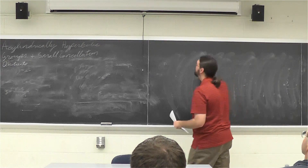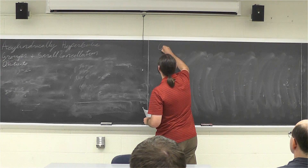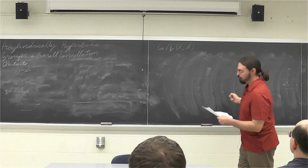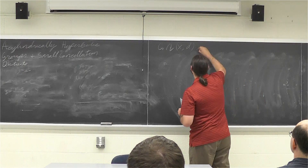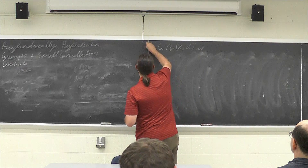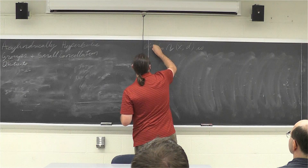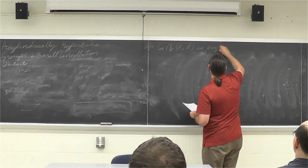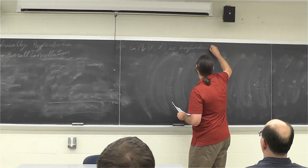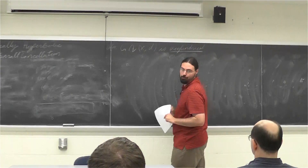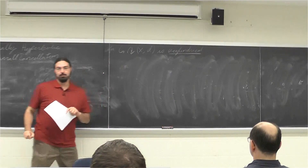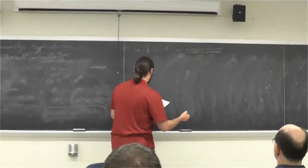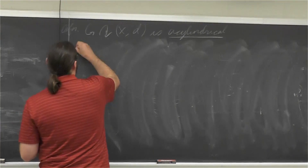We're going to start with the group G acting on some metric space X with metric d. This action is called acylindrical — this is an action by isometries. My actions on metric spaces are always going to be a group acting by isometries.